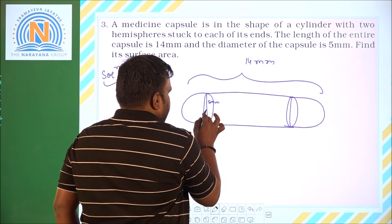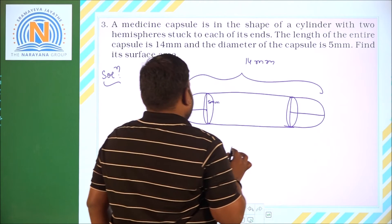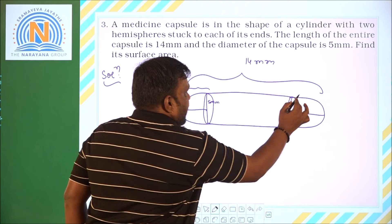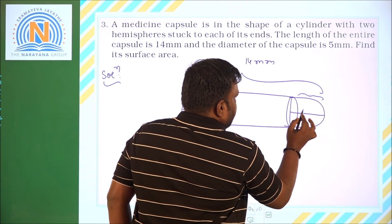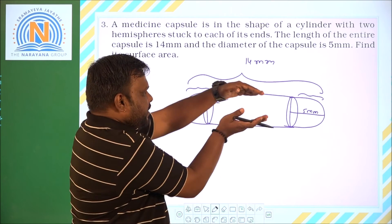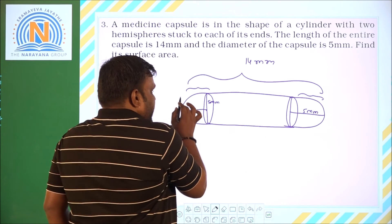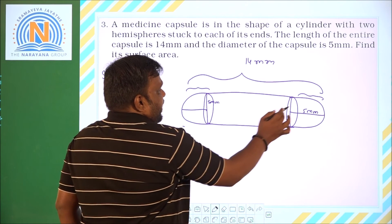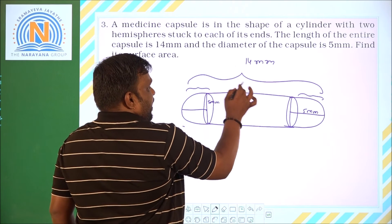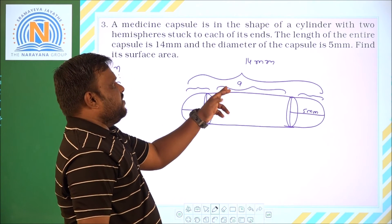Since the diameter is 5 mm, the radius will be 5/2 for the cylinder. The two hemispheres on either end each have a radius of 5/2, that is 2.5 mm. So 2.5 + 2.5 = 5 mm for the two hemispheres combined, and 14 minus 5 gives 9 mm as the length (height) of the cylinder. So H = 9 mm and radius = 5/2 mm.